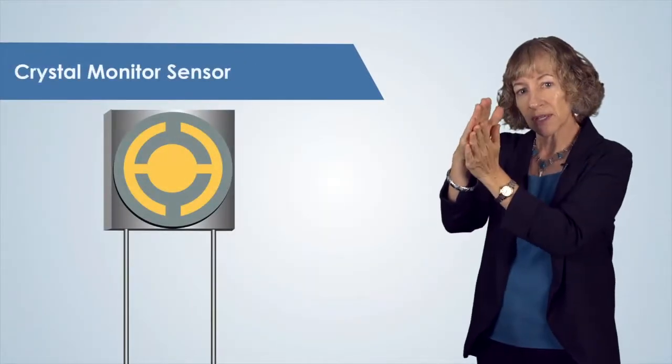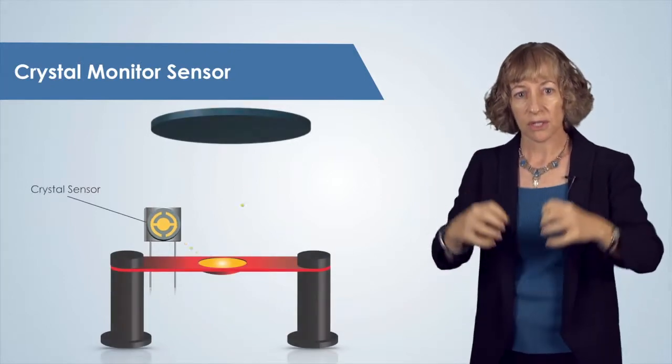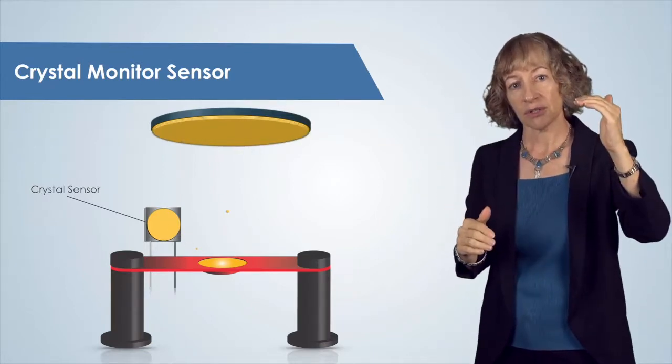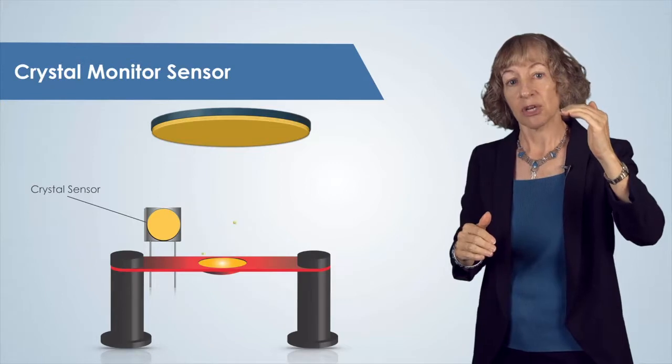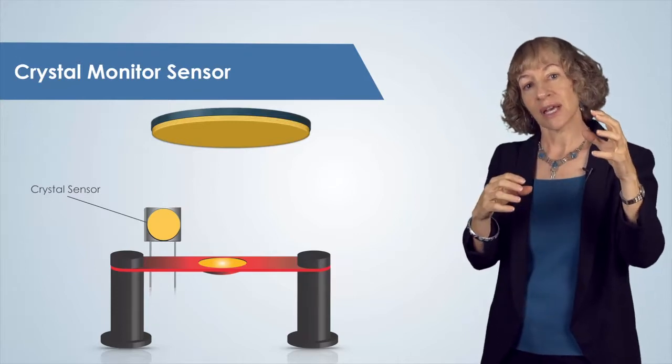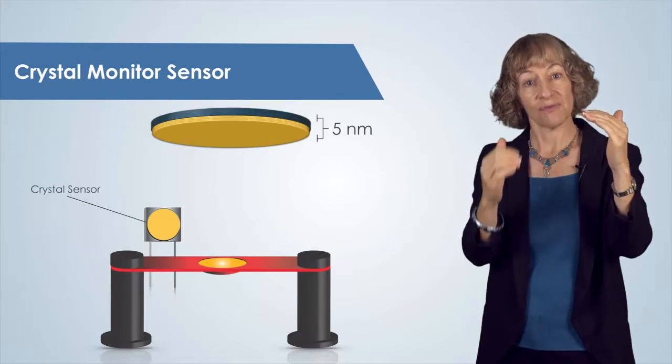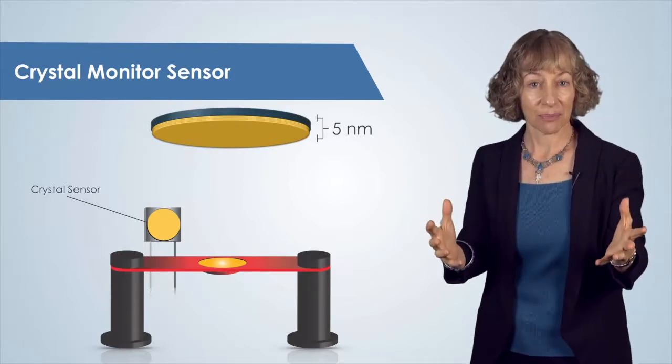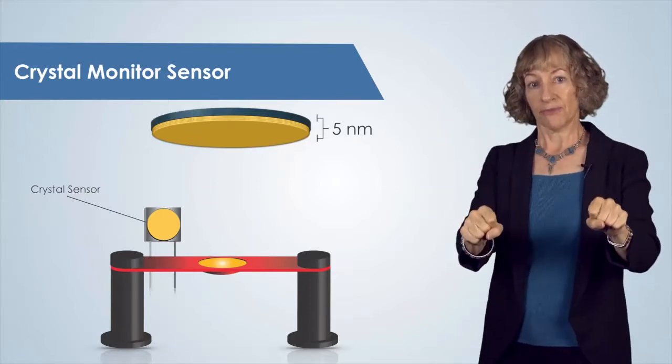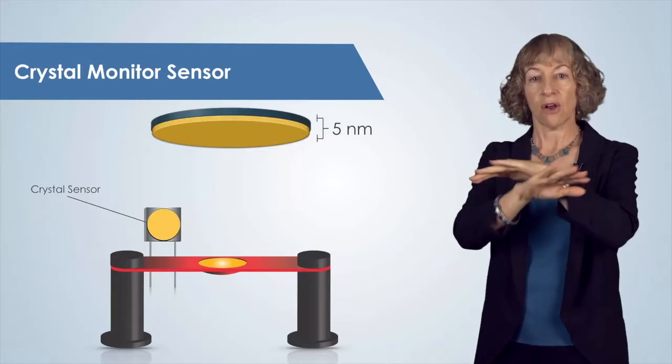To monitor this film thickness, we place a crystal sensor in the vacuum chamber, so that the source material is deposited onto the sensor at the same rate as onto our substrate. This crystal sensor vibrates, and the vibration frequency changes as the film is deposited onto the crystal, enabling us to sense this change in vibration and calculate that deposited film thickness as the deposition is taking place in real time. When the desired thickness is reached, we stop the flow of electrical current through the boat, which stops the heating of the source and halts the deposition.